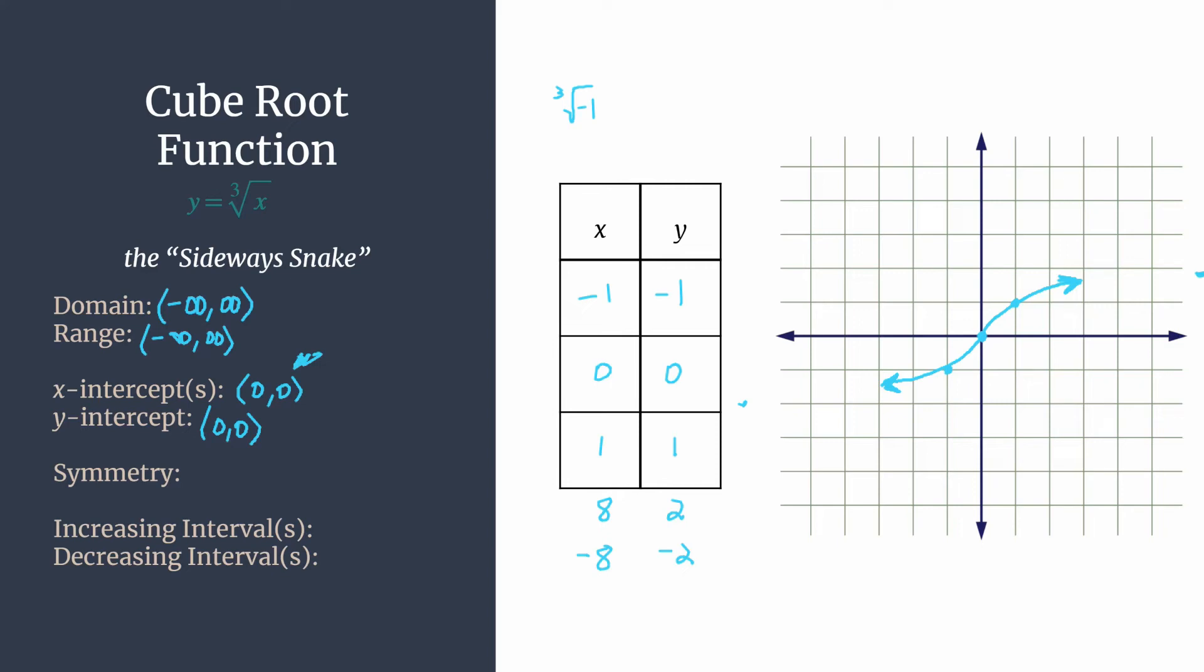All right, symmetry. This is another great example of origin symmetry. Okay, so remember origin symmetry happens when you can take your graph and you can rotate it 180 degrees about the origin and your graph lands back on itself. Okay, so you can imagine doing that with this graph.